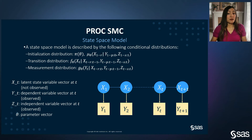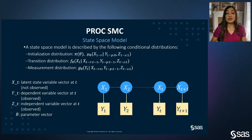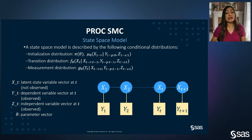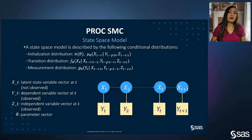Sequential Monte Carlo methods provide simulation-based approximate solutions to the state-space model, or SSM, also known as the hidden Markov model, especially for non-linear and non-Gaussian SSMs. The SSM consists of a discrete time process with x sub t, y sub t, and z sub t. X sub t is an unobserved Markov process called the state variables. Conditional on x, the observable process y sub t is a sequence of independent random variables called the dependent variables. The SSM also has independent variables z sub t, which are exogenous variables determined outside the SSM. In general, the SSM can be expressed in three distribution functions: the initial distribution function, the transition distribution function, and the measurement distribution function.